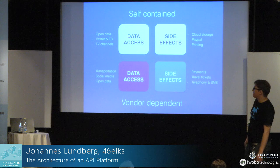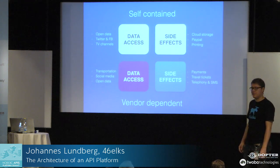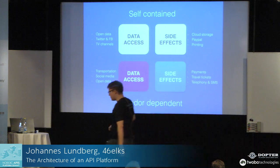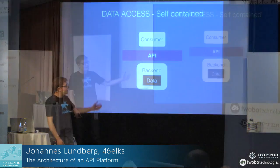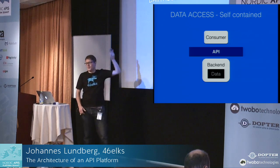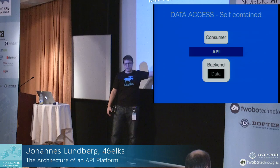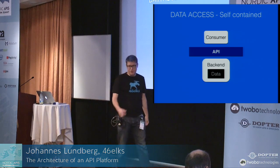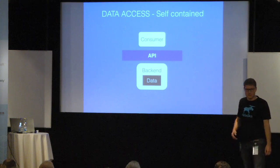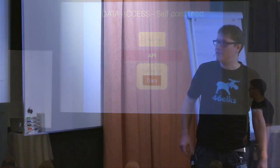Open data is a big topic when it comes to APIs. You have the easy open data stuff where there's basically a CSV file imported into a database and then an API on top of that — everything self-contained. A data access self-contained API looks like this: you have the consumer, the API, your API backend, and data basically inside your backend. If you have full control of your data, you can throw in 10 replicas of the same backend. If you control the updates of the data, it's very easy to make scalable and cloud-ready.